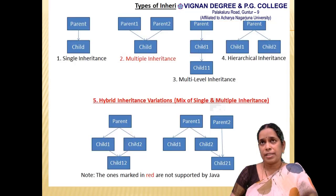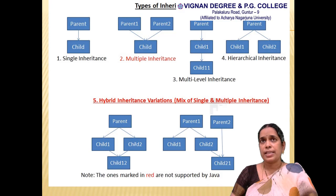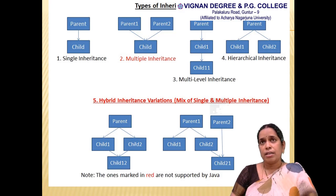Now we will see the diagrammatic representations of inheritance. The first is single inheritance — from a single parent class, we derive a single child class. The second is multiple inheritance — from two or more parent classes, we can derive a single child class.